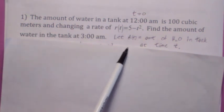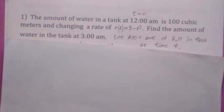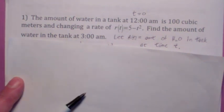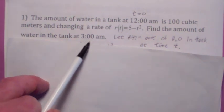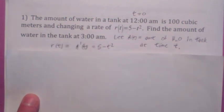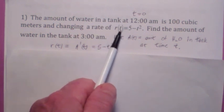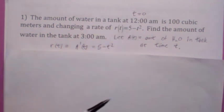Suppose you have this tank of water. At midnight, t equals zero, you have a hundred cubic meters, and the rate at which the volume's changing is given by five minus t squared. The question is, how much water is there at t equals three, three a.m.? So if a of t is the amount of water in the tank after t hours, they're giving you a prime. This is the rate at which a is changing. So this would be a prime of t.